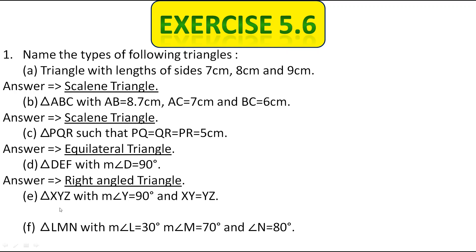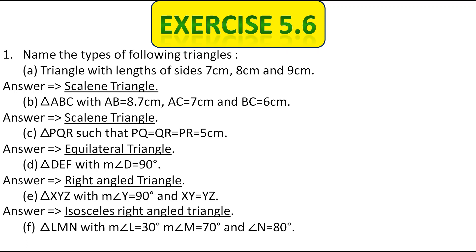Next, triangle XYZ with angle Y = 90 degrees and XY = YZ. One angle is equal to 90 degrees, therefore it is a right angle triangle. But also two sides are of equal length, so this triangle is called an isosceles right angle triangle. Next, triangle LMN with angle L = 30 degrees, angle M = 70 degrees, and angle N = 80 degrees. All three angles are less than 90 degrees, so this triangle is called an acute angle triangle.